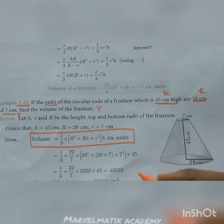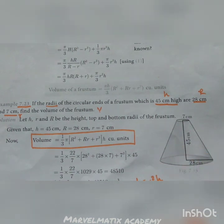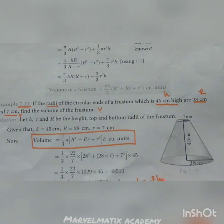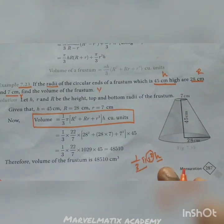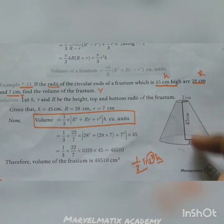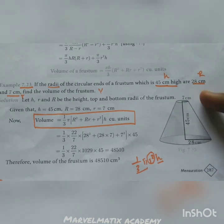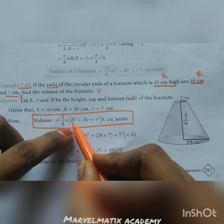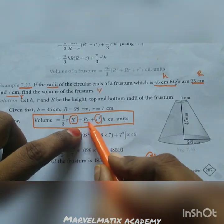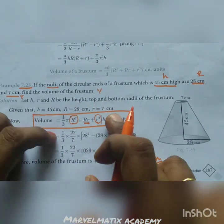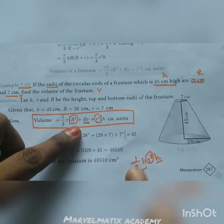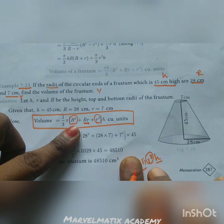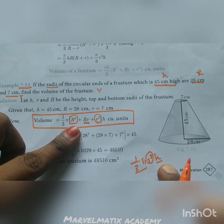So if you look at the formula, the formula is 1/3 π h (R² + Rr + r²). This is the frustum volume formula: 1/3 π h (R² + Rr + r²).